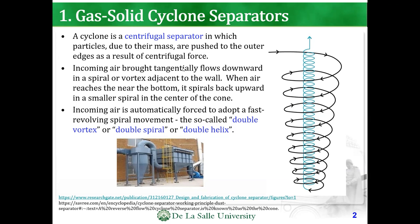Incoming air is brought in tangentially — do take note of the word tangent. It flows downward in a spiral adjacent to the wall, so it forms a vortex.